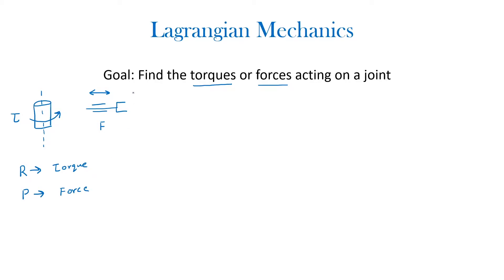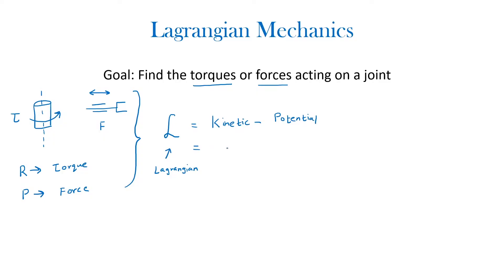The torques and forces can be found using the Lagrangian, simply denoted by the capital letter L, which is equal to the kinetic energy of the system minus the potential energy. As a shorthand notation, I will use KE for kinetic energy minus PE for potential energy. The terms for kinetic and potential energy exist in terms of theta and theta dot, where theta represents the position of the robot manipulator and theta dot represents the velocity.